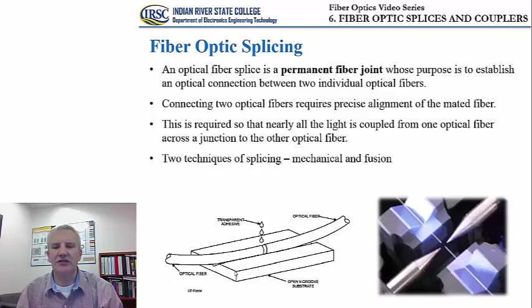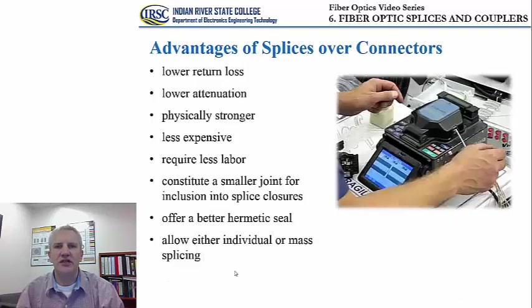Fusion splicing is a different technique where you are not using adhesive to make a permanent connection. Instead, you bring two optical fibers into close contact and apply a high current arc that melts the glass and establishes the connection between the two loose ends. In general, optical splices provide lower return loss and lower attenuation relative to connectors. Optical splices are also physically stronger than connectors and less expensive.